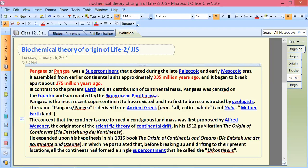Pangaea is the most recent supercontinent to have existed and the first to be reconstituted by geologists. The name - Pan means entire and Gaia refers to basically earth. So that's why Pangaea's name comes from the earth's name. The concept that continents once formed a contiguous landmass was proposed by Wegener.